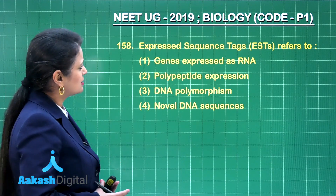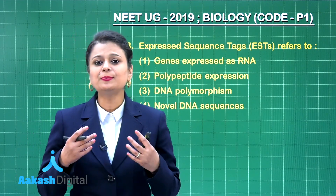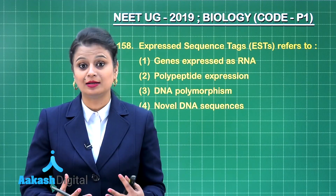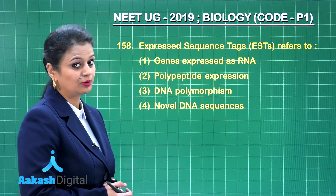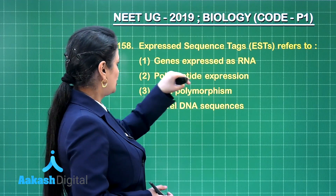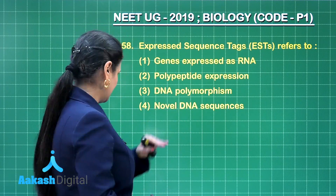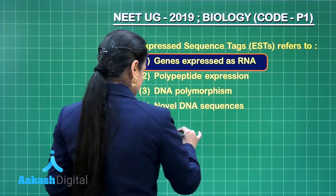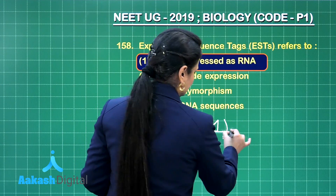Question 158: Expressed Sequence Tags (EST) refers to a part of DNA which has the ability to form RNA — it can express itself in the form of RNA. That's why these are called expressed sequence tags; they represent genes expressed as RNA. So the right answer here is option number one.